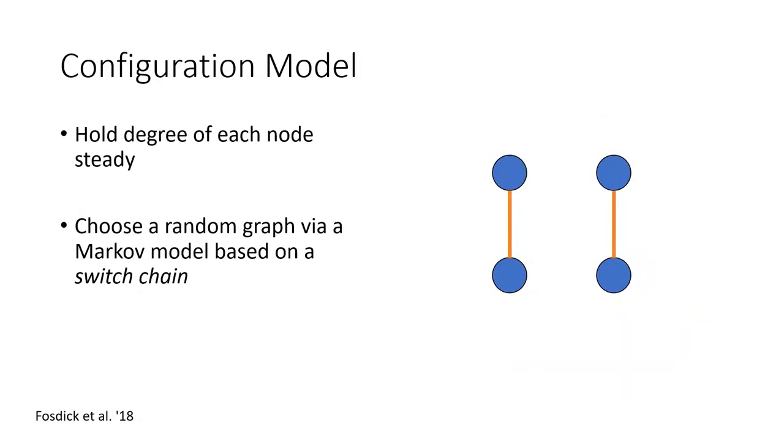The most common way to compare a graph to a null model is to use something called the configuration model. The configuration model randomizes the edges around a graph such that the degree sequence is held steady, essentially allowing you to choose a graph uniformly at random with any given degree sequence. This is done using a Markov model based on a switch chain.